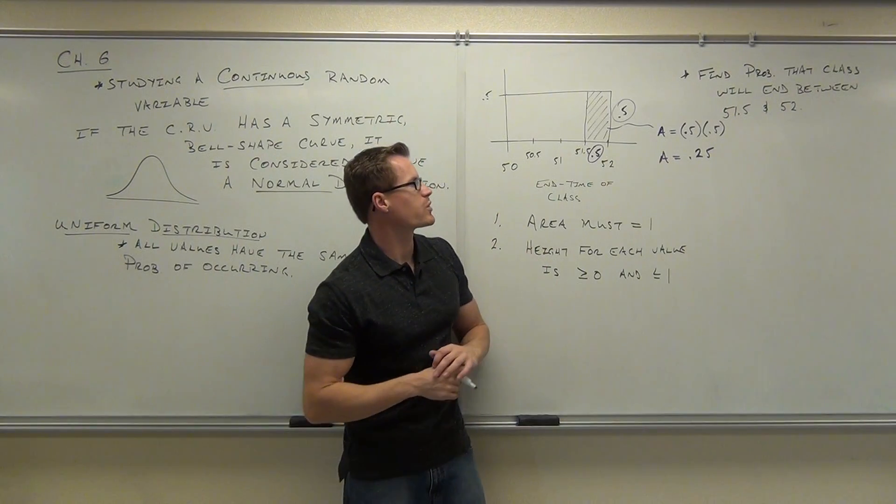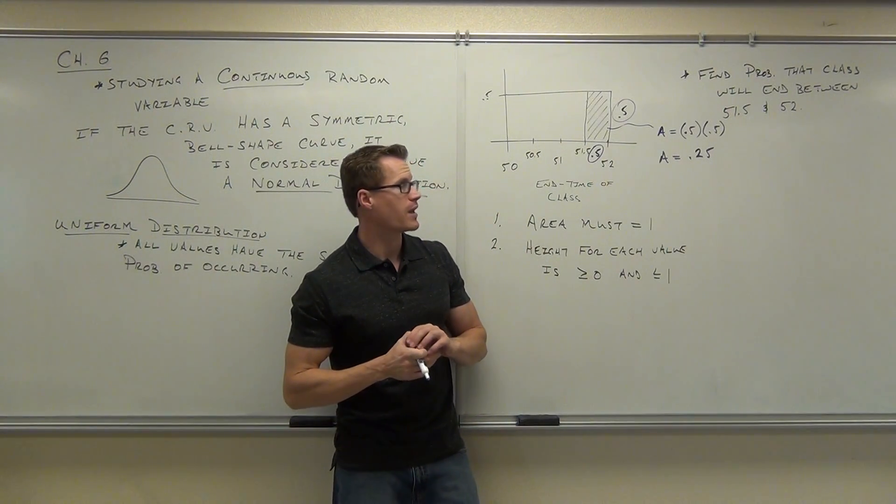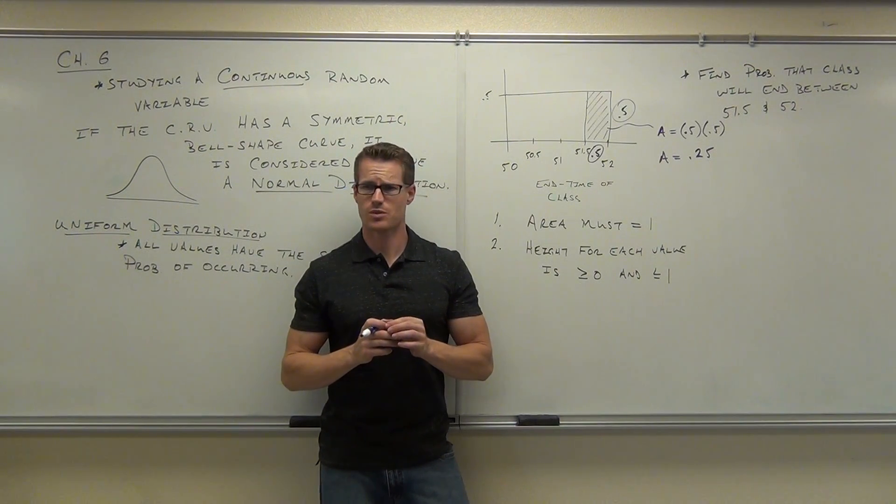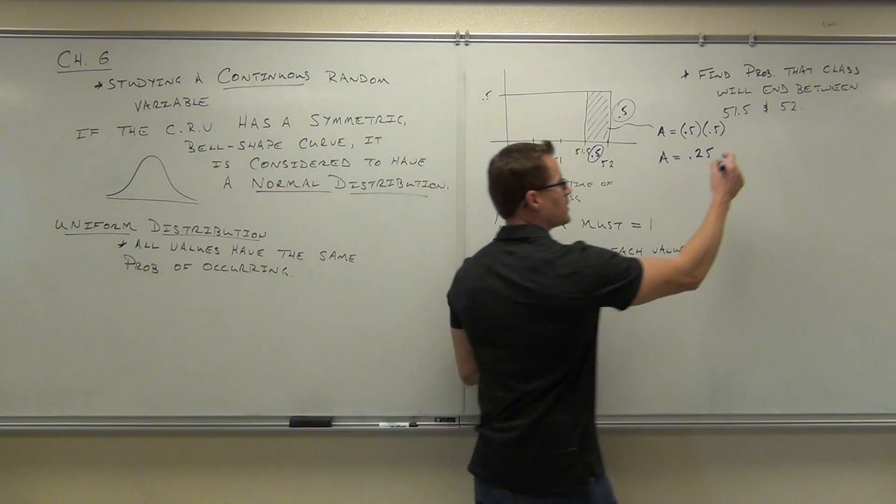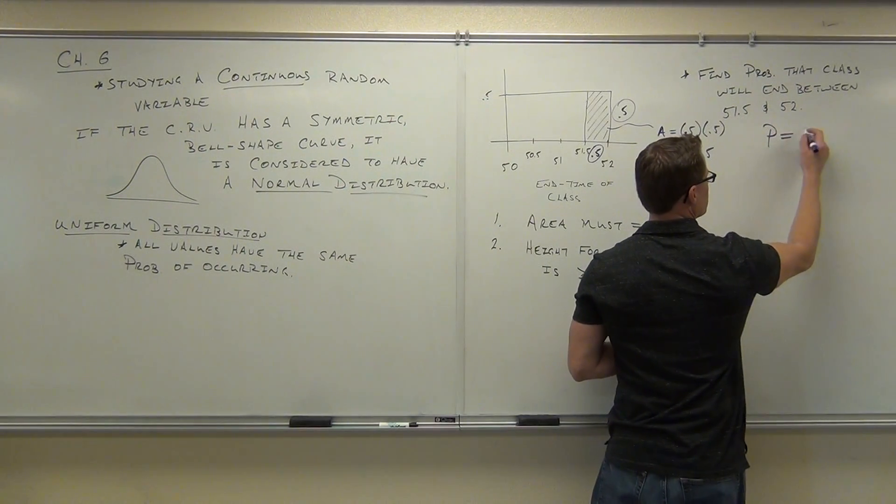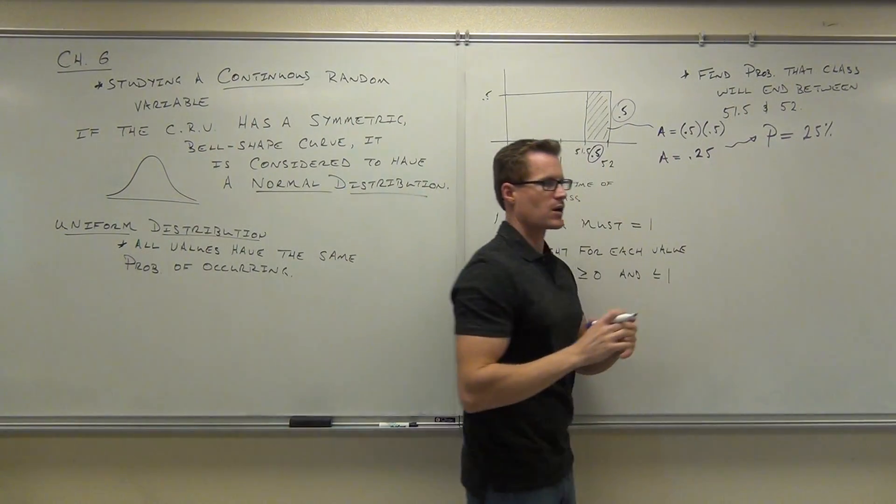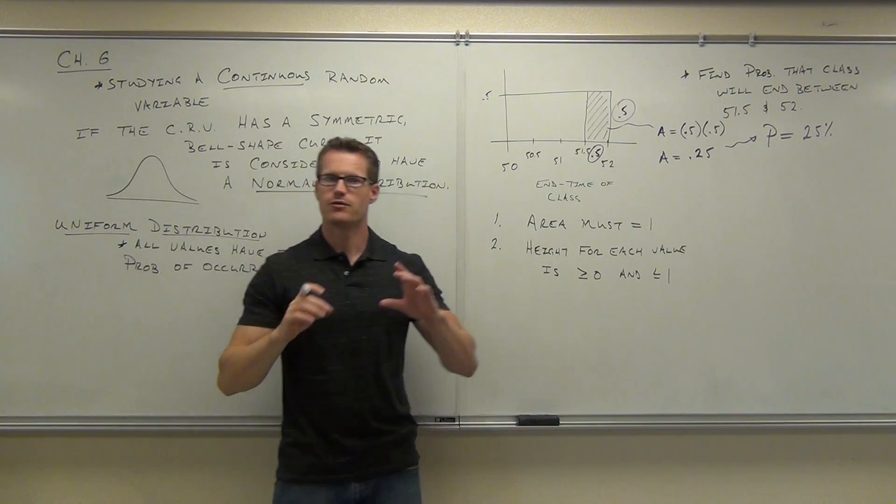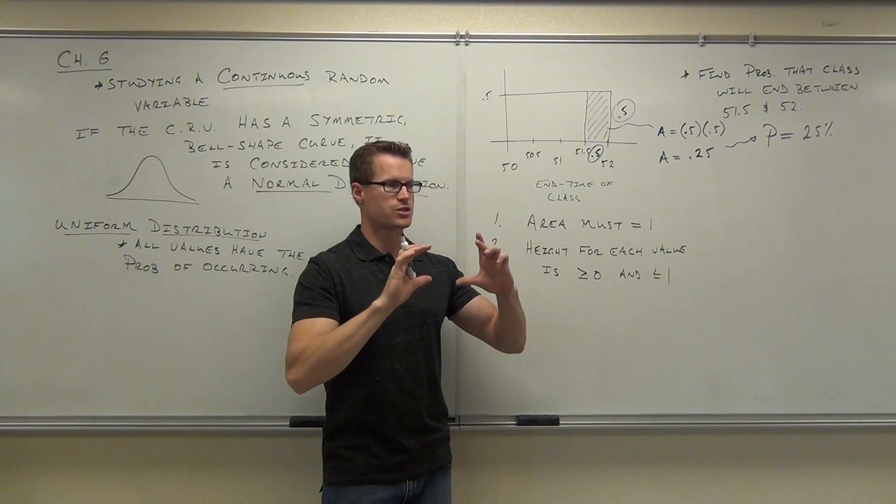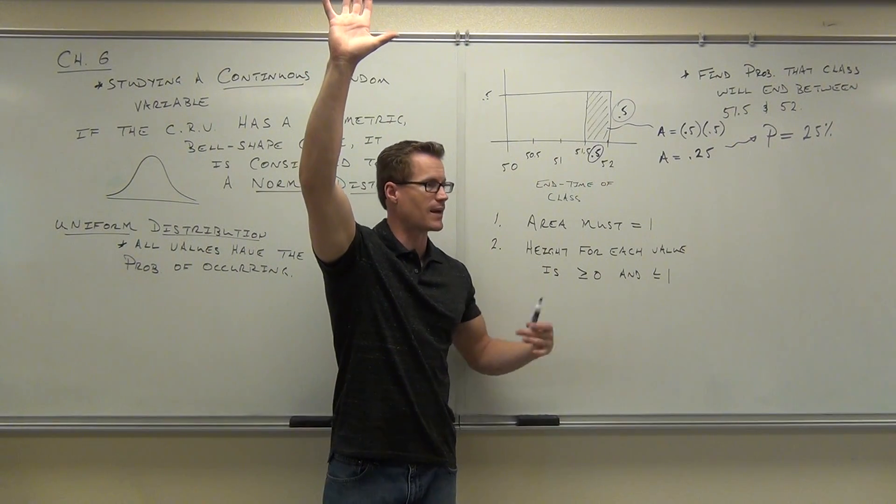So we can answer the question, what's the probability that our class is going to end between 51.5 and 52 minutes? And you say, what's the probability? 25% probability. We need to get used to the idea that the area and the probability are one and the same. If you have an area equal to 1, you can associate it with your probability. Raise your hand if you're understanding that concept.